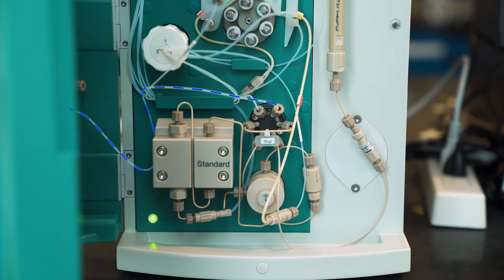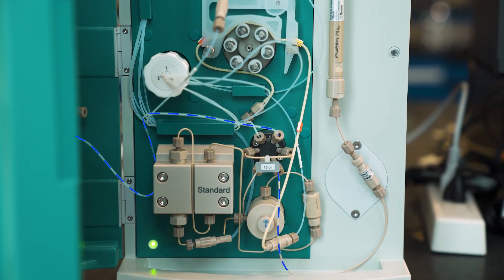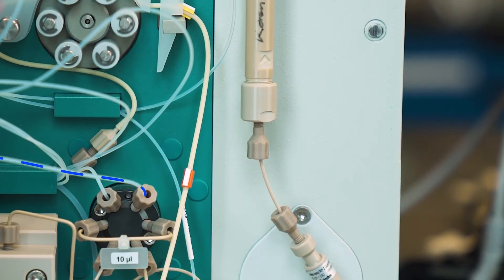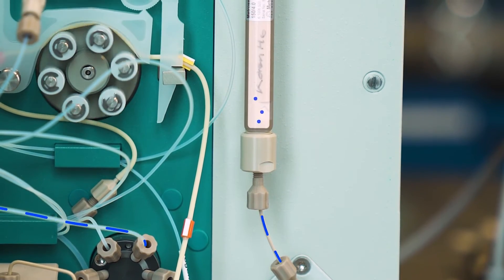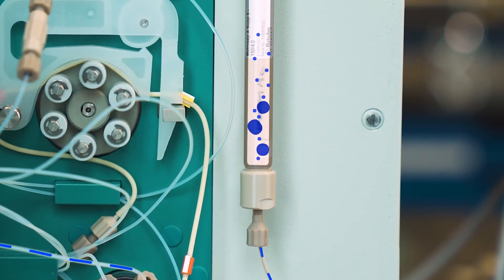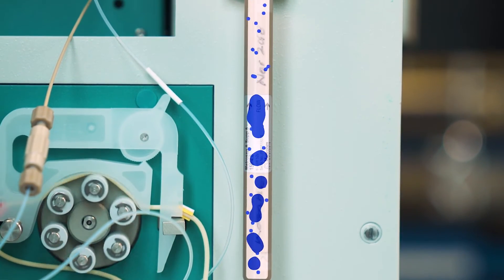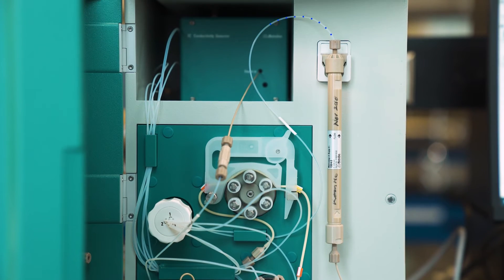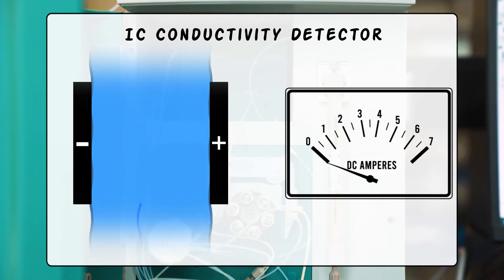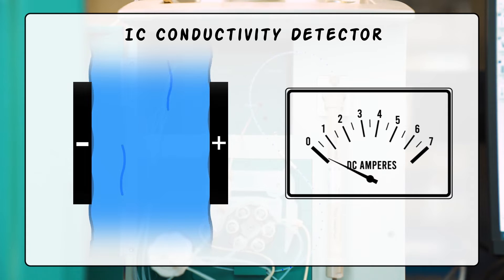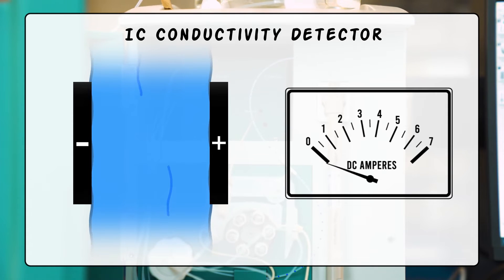The sample is injected into the column, which is where the separation of the sample components occurs. The ions are separated based on their size. Larger ions get stuck in the column and take longer to find their way through to the detector. The detector measures the conductivity of the solution running through it. Pure water does not conduct electricity, so the conductivity is very low, near zero. When an ion passes through the detector, the conductivity increases, and we'll see a peak in our results.